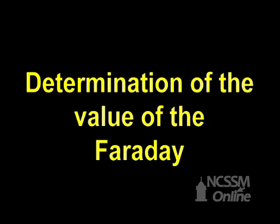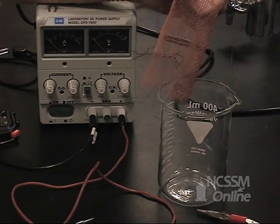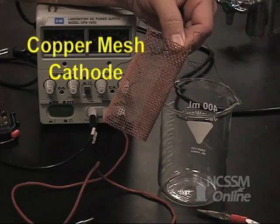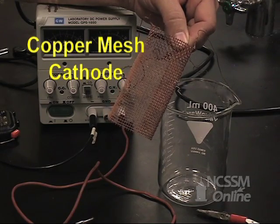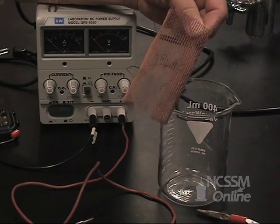We're going to determine the value for the Faraday by electrolyzing a solution of copper sulfate. We have a copper mesh electrode, which is going to be our cathode. We're going to plate copper metal onto the wire mesh.